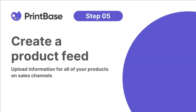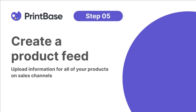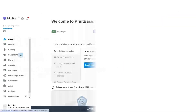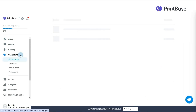Now that we are halfway through the store setup, let's learn how to create a product feed to sell on multiple channels. You will use your product feed to upload information for all of your products on sales channels such as Google. PrintBase has provided you with all the tools to create and edit your feed in just a few steps. From your seller's dashboard, go to Campaigns, choose Product Feeds.